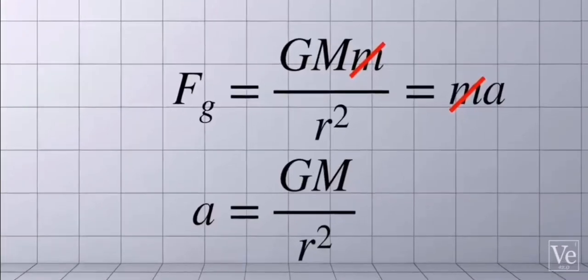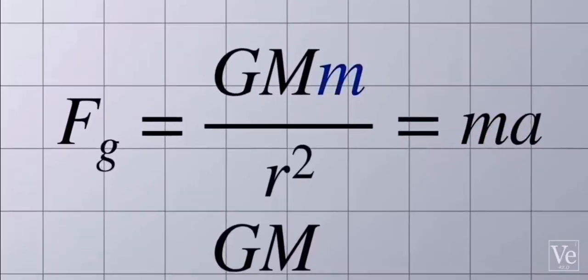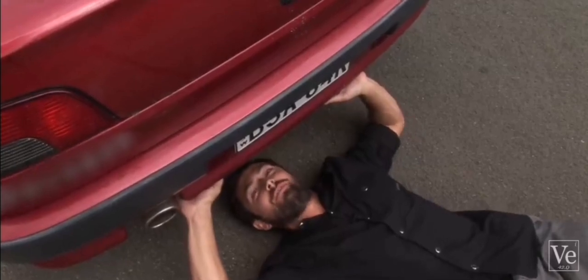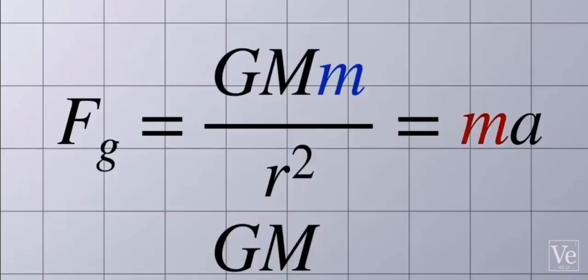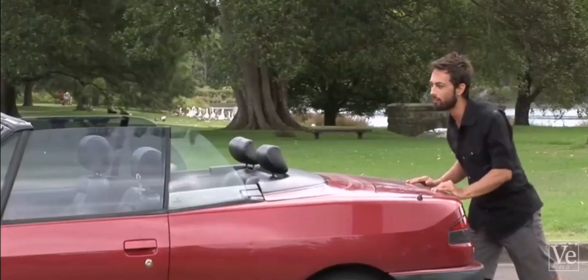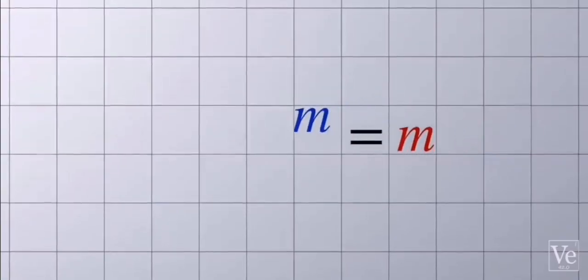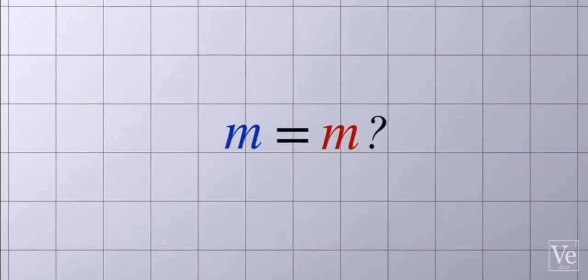The mystery is why we could cancel these two m's. The one on the left was gravitational mass, the property of an object that creates and experiences a gravitational field. While the m on the right is inertial mass, a measure of resistance to acceleration. Why should these two conceptually different properties be numerically identical?